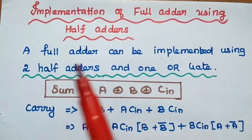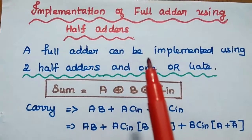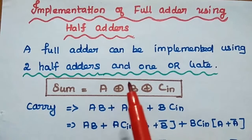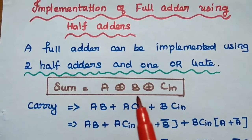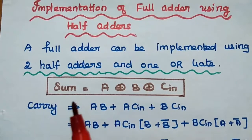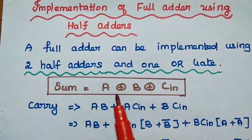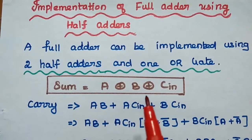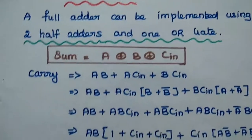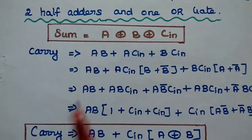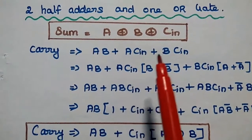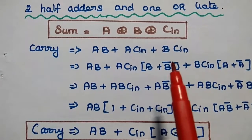A full adder can be implemented using two half adders and one OR gate. The boolean expression for the sum is equal to A XOR B XOR C. The carry expression is equal to AB + ACin + BCin.